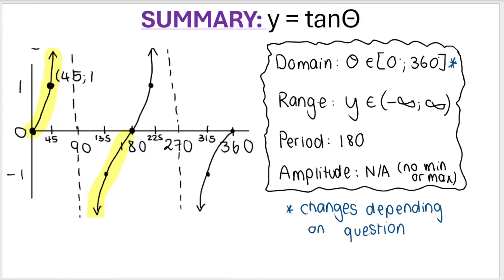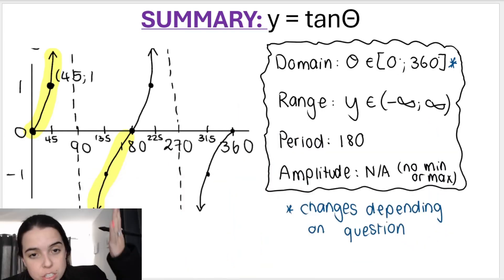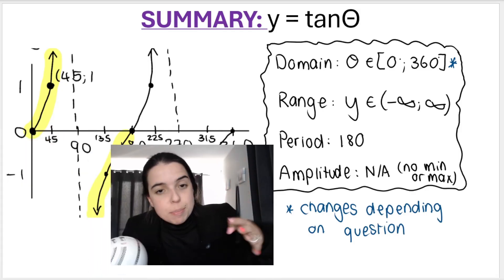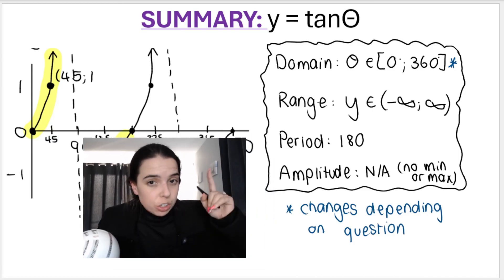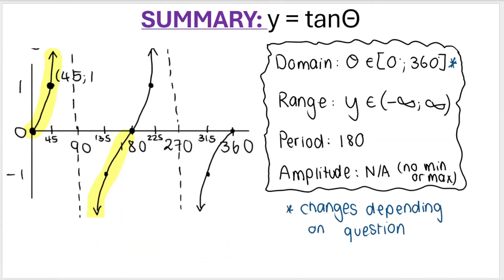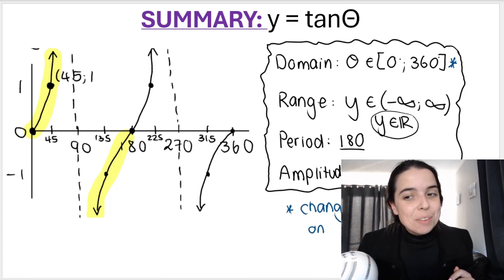Here is a summary of the tan graph and everything you need to know. The domain will change depending on the question — for this graph the domain is from 0 to 360, but they can ask you to plot for any range of x values. The range is y is an element of negative infinity to positive infinity, or y is an element of real numbers. The period is 180 degrees — remember for cos and sin it's 360. Amplitude is not applicable. I hope this video has been helpful — can't wait to see you in another one very soon. Bye everyone.